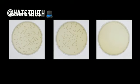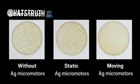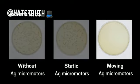The team also attached silver to the micromotors to investigate their ability to kill bacteria. The silver micromotors could kill E. coli in a petri dish, most effectively when they were moved around by a magnetic field.